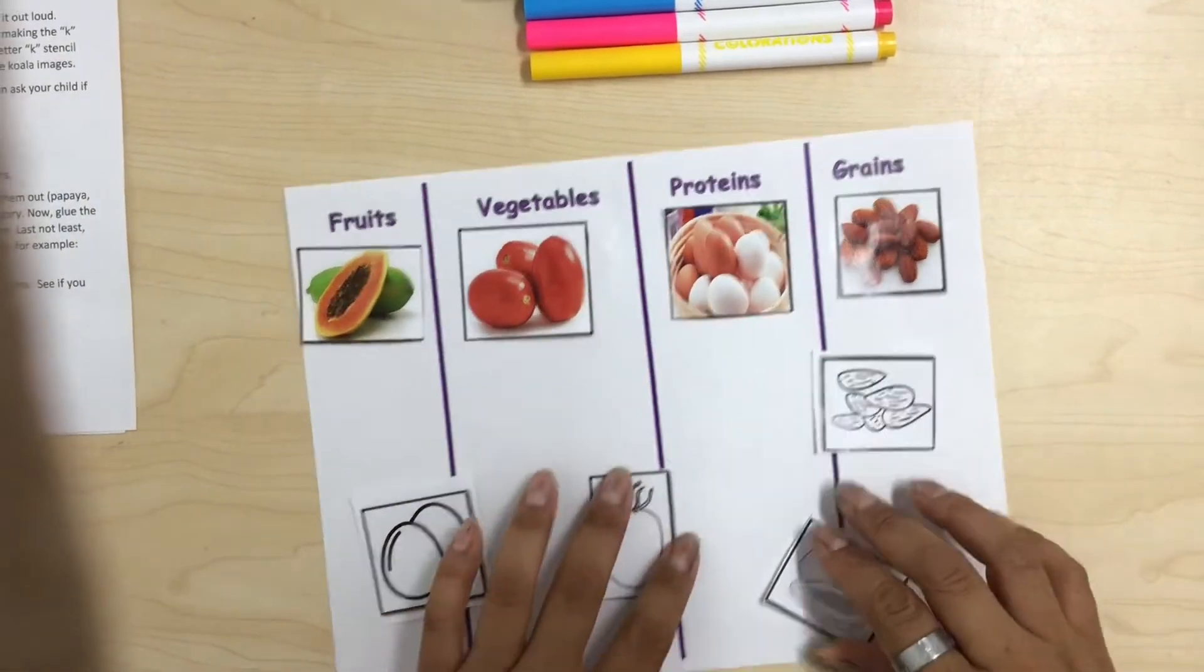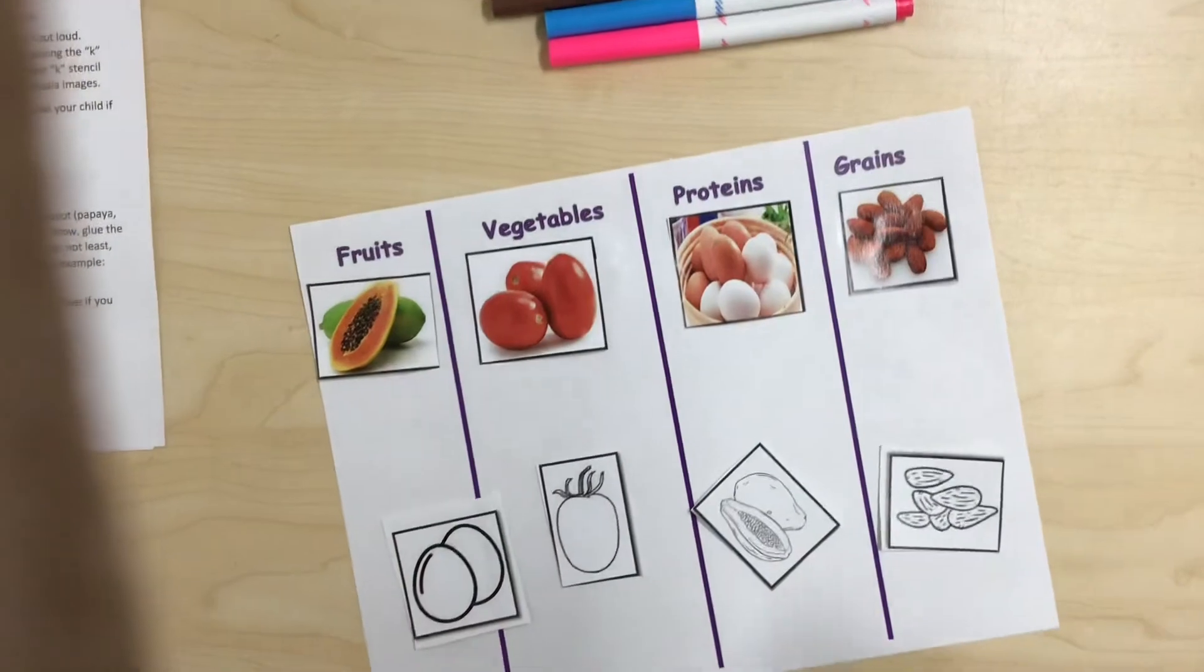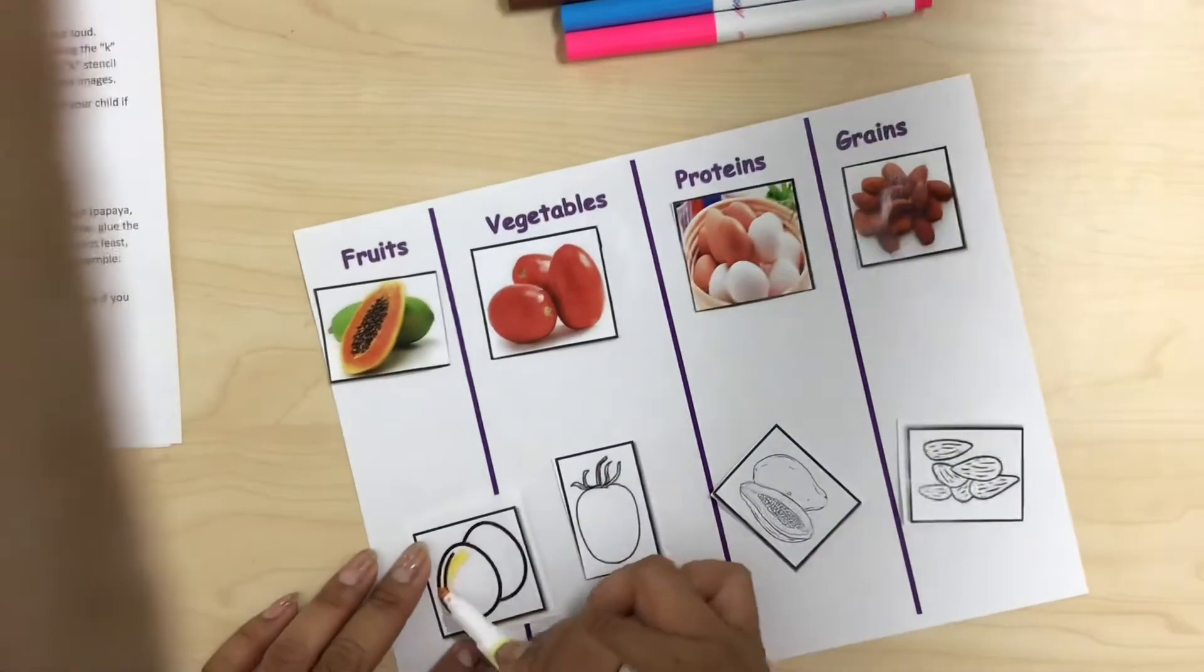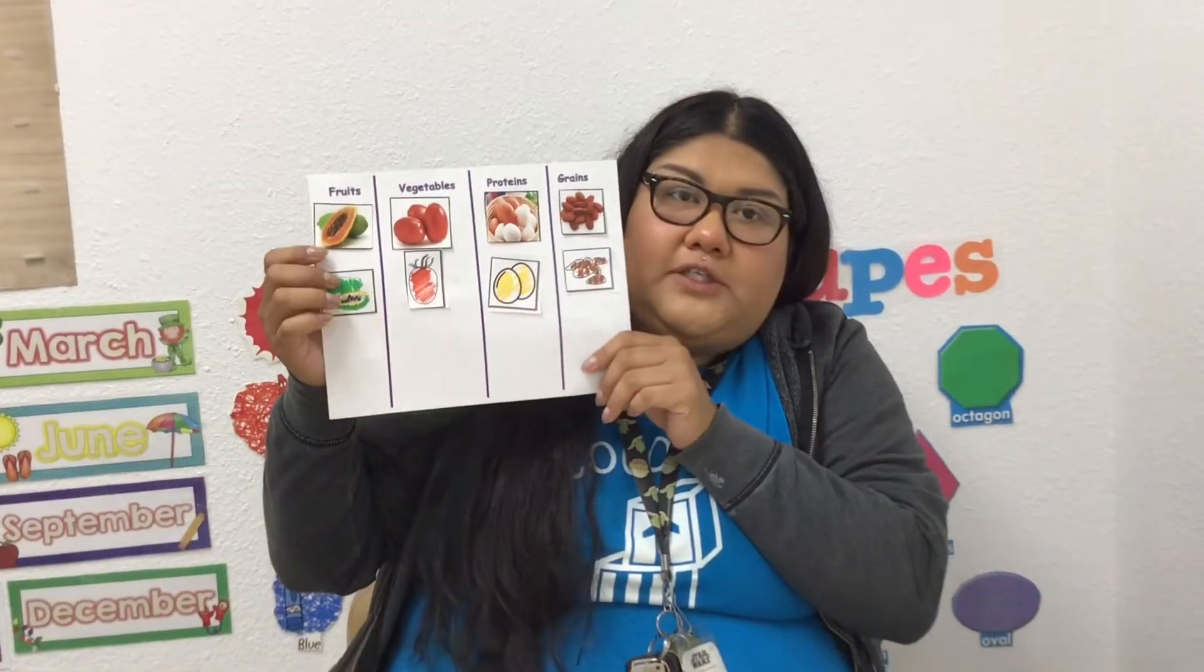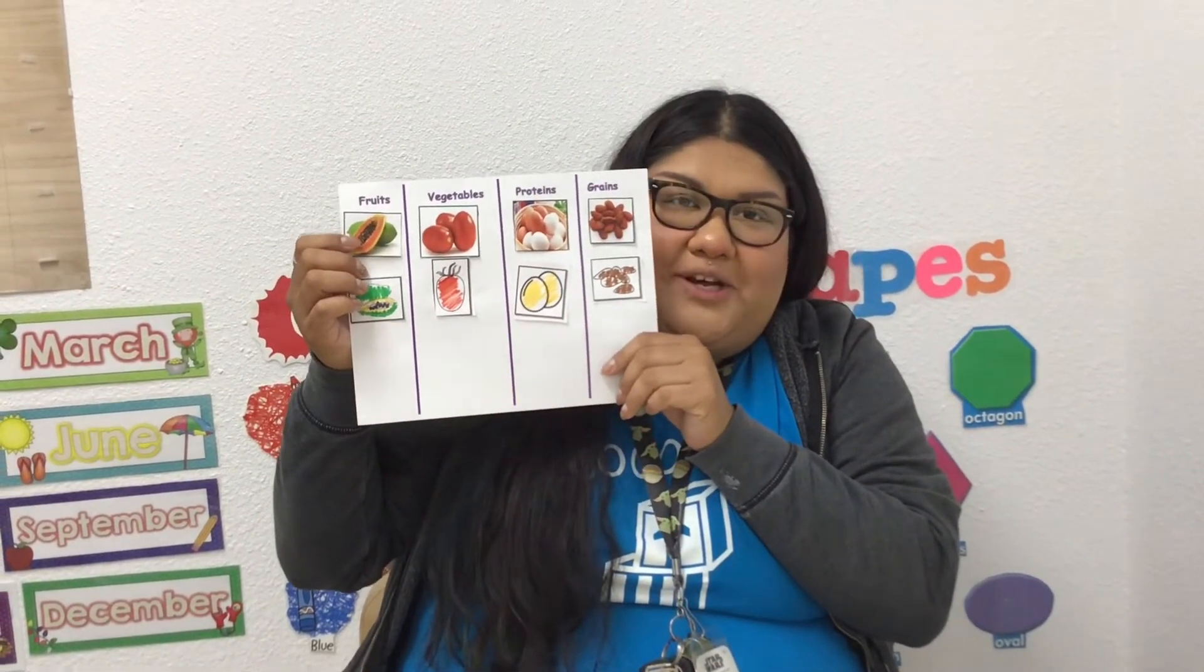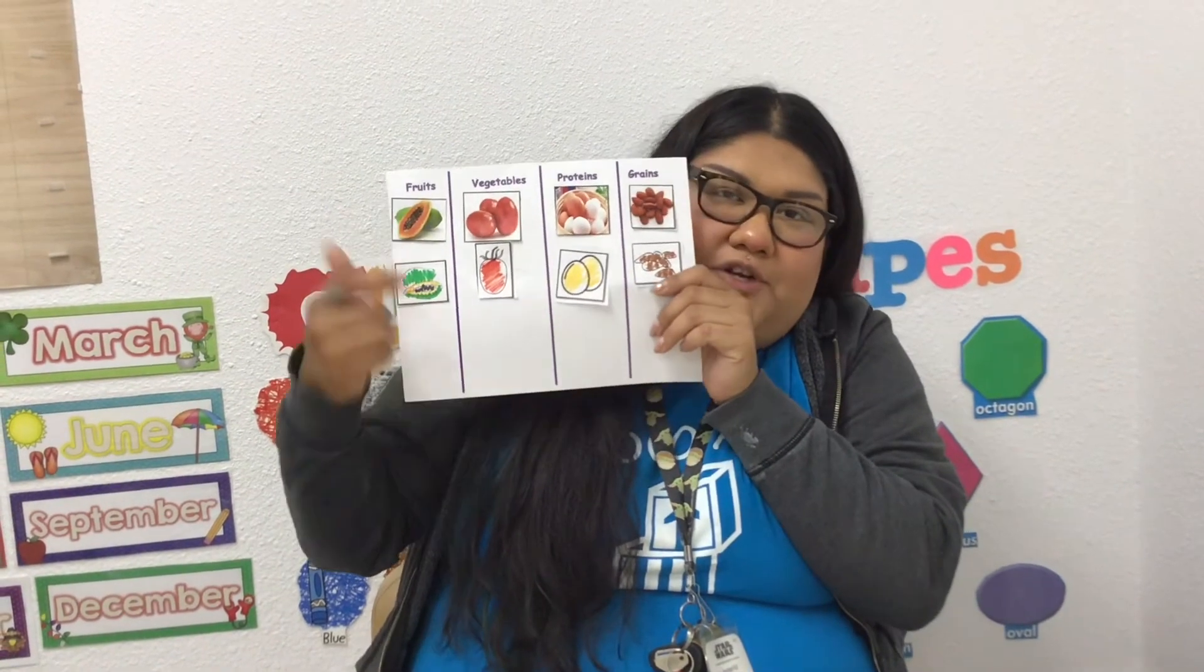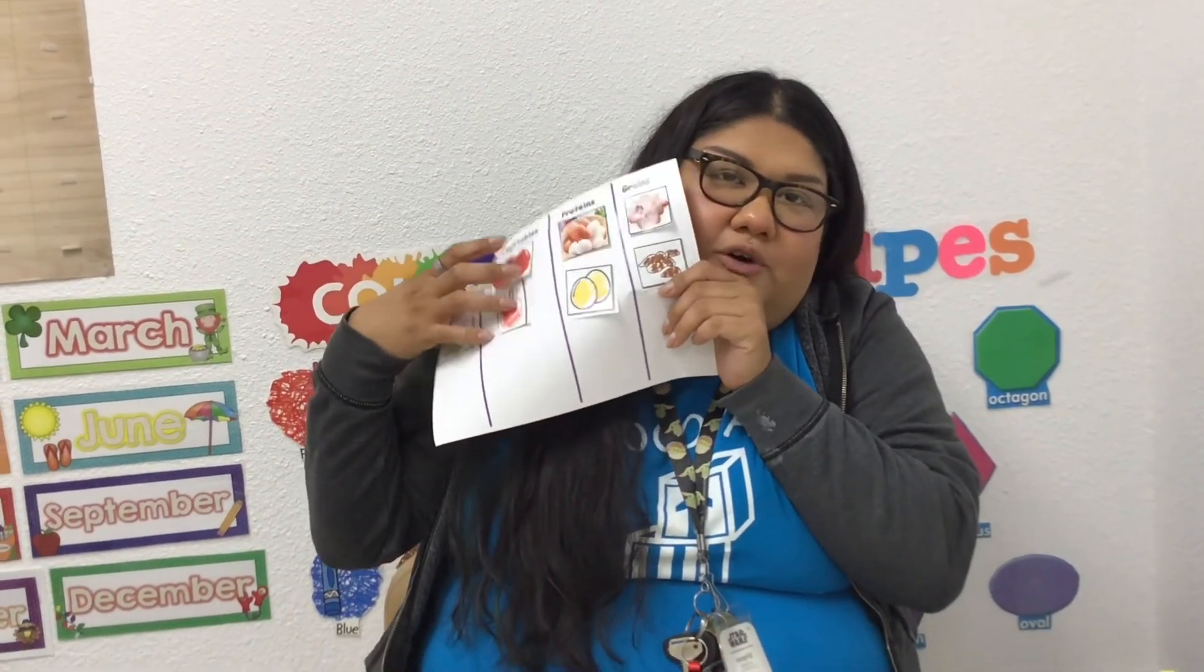This was our activity for today as we focus on the shape of oval this month. Have you guys seen any other oval shapes, like when you guys go to the grocery store or around your house?